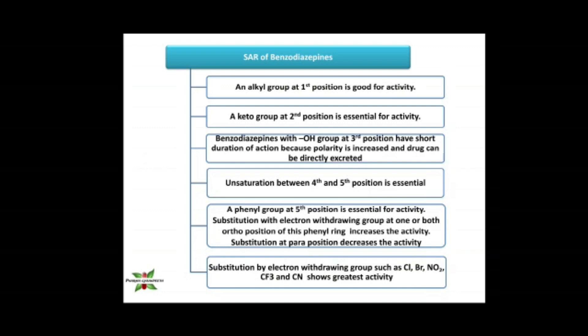Quick revision: At position one, an alkyl group or ring substituents like triazole and imidazole are acceptable; aromatic groups should not be present. At position two, a keto group is essential. At position three, no substitution is preferred, but if a hydroxy group is present it increases polarity and results in shorter duration of action. At position four, there should be unsaturation between positions four and five. At position five, a phenyl group is essential; the ortho position of the phenyl can have an electron withdrawing group, but not the para position. At position seven, an electron withdrawing group is essential.